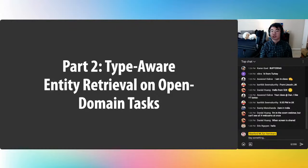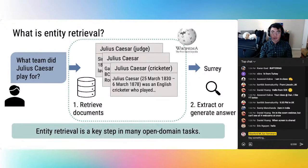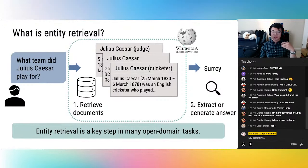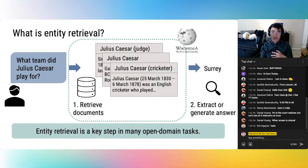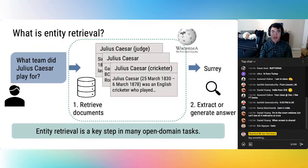That brings us to part two: applying insights from supervised contrastive learning to open domain entity retrieval. Entity retrieval involves using a model to get relevant documents from a knowledge base to answer a query like 'what team did Julius Caesar play for?' — figuring out who Julius Caesar is and using a model to extract an answer using retrieved documents. Entity retrieval is a key step in many open domain tasks including question answering, search, and fact checking.